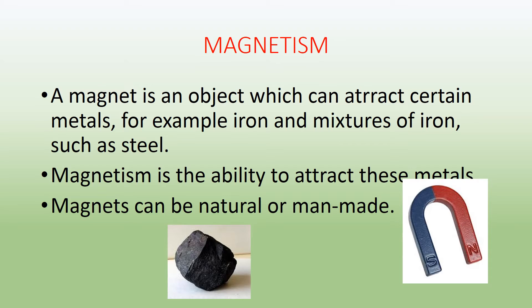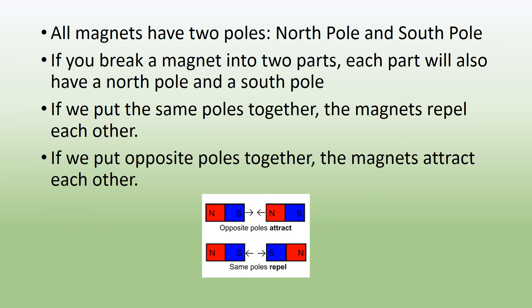Magnetism. A magnet is an object which can attract certain metals, for example iron and mixtures of iron such as steel. Magnetism is the ability to attract these metals. Magnets can be natural or man-made. All magnets have two poles.